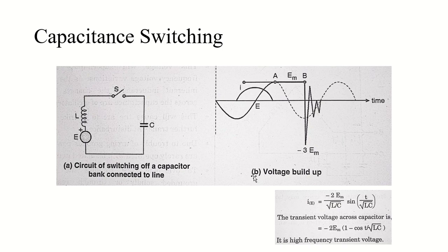Now let's discuss about capacitance switching. In power systems, a hazardous condition occurs when a capacitor bank connected to a long transmission line gets disconnected. Consider the power system shown in this figure — a simple basic circuit having voltage source E, L as the source inductance, and C as the capacitor bank connected to the system through switch S. Now let's consider that switch S interrupts the capacitor current at some instant A, and at this instant the capacitor is charged to its maximum value EM.